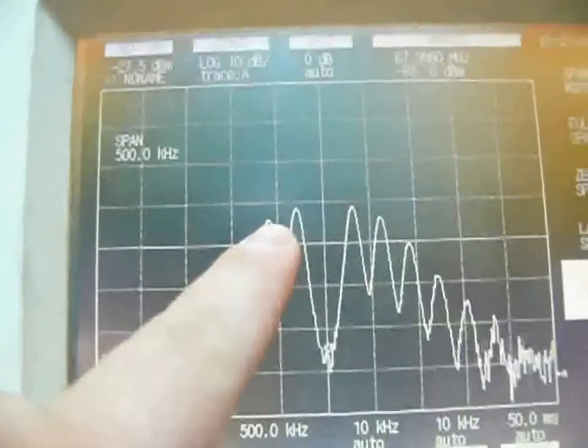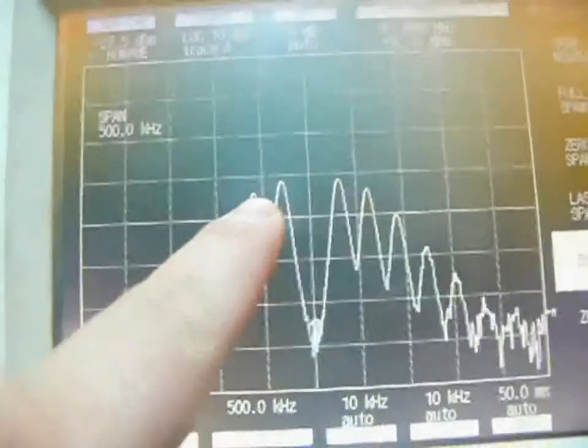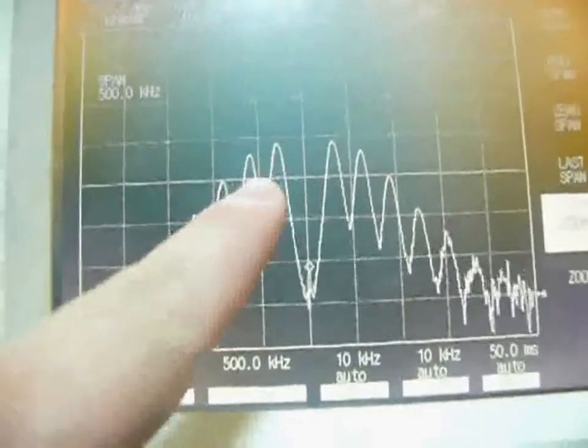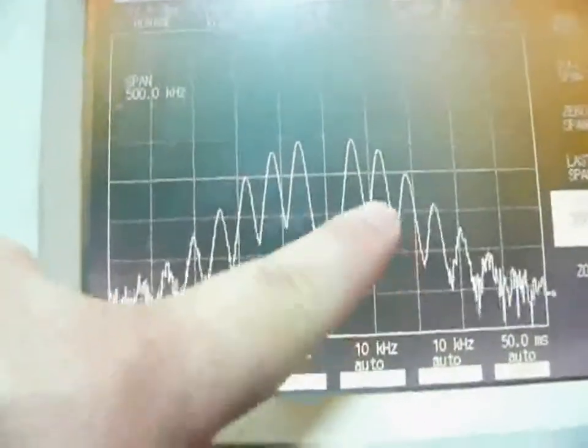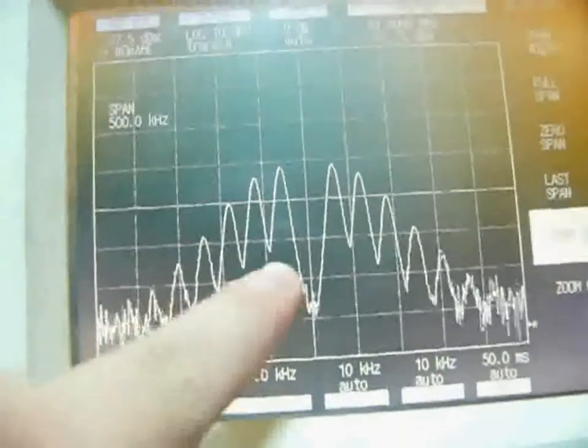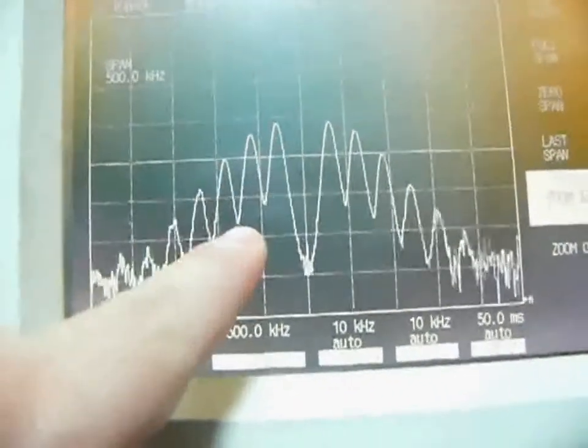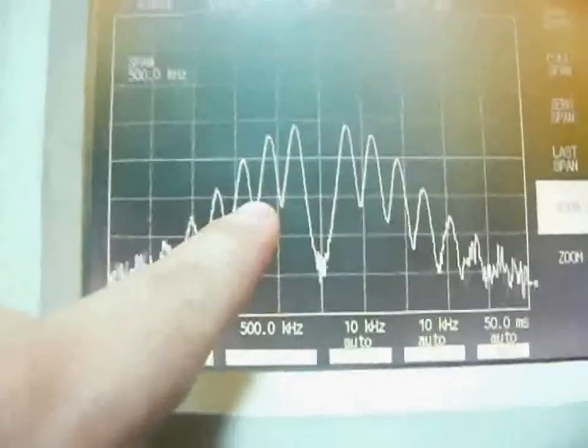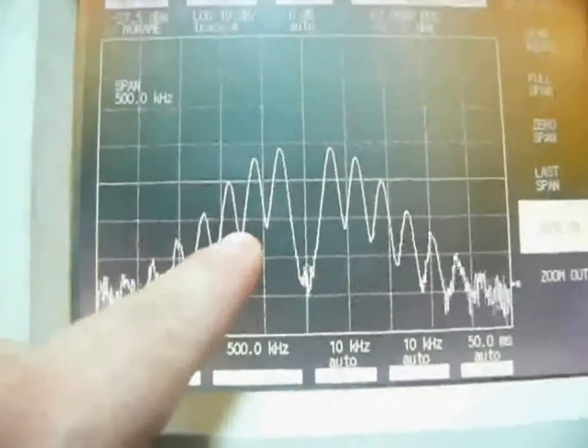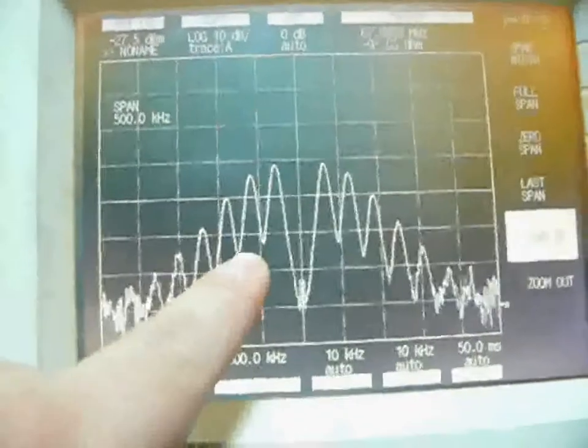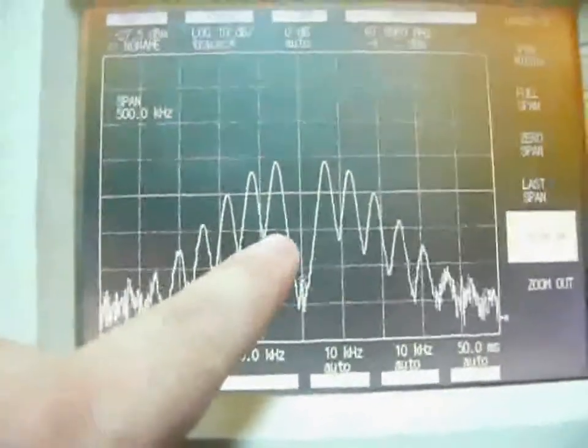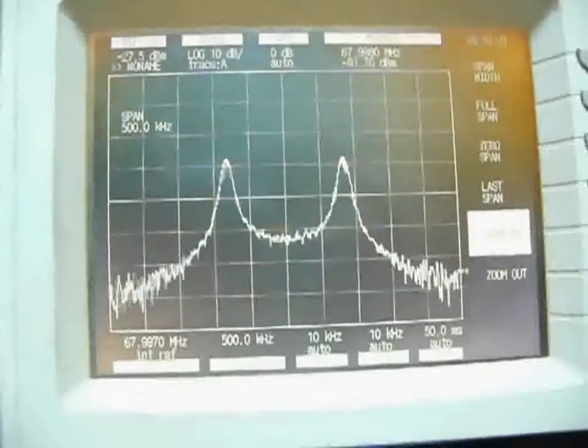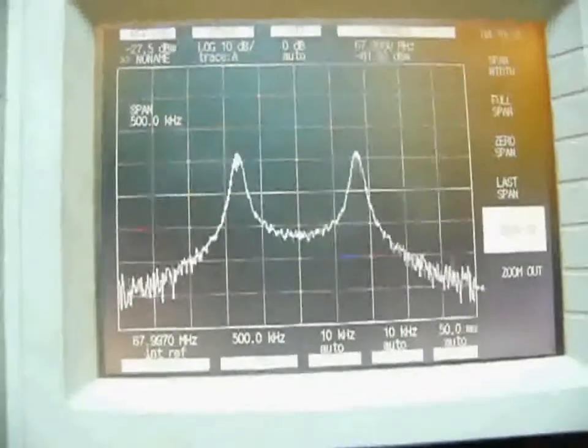So this kind of waveform looks like a double sideband waveform, but actually it's frequency modulation. It looks like a double sideband AM modulation waveform. Now I change the modulation waveform to square wave. It looks like this.